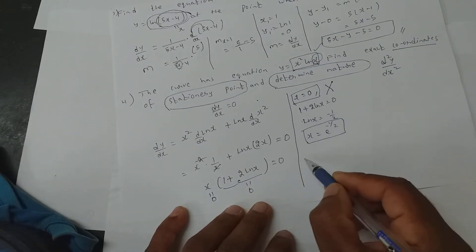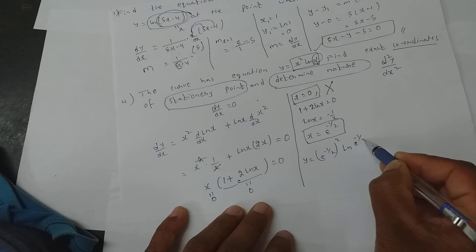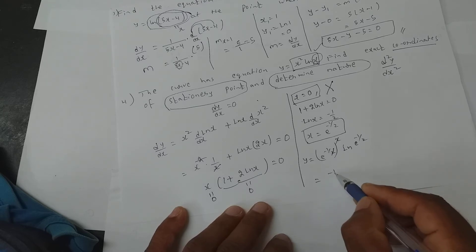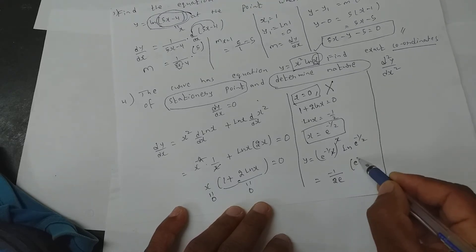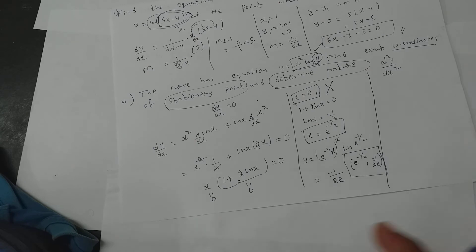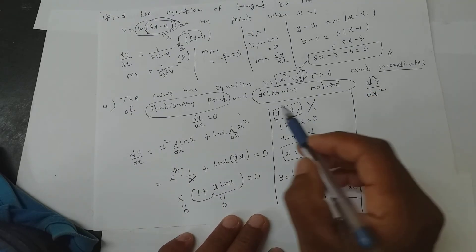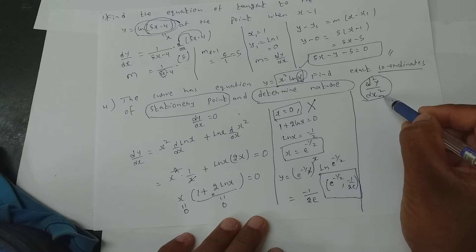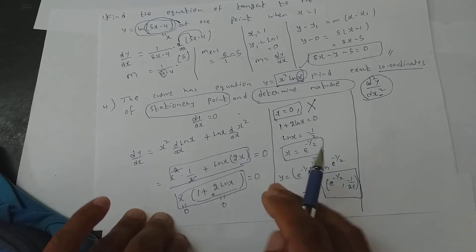They are asking for coordinates, so you need to find y as well. Place x equals e to the power minus half into y equals x squared ln x. So y equals (e to the power minus half) squared into ln(e to the power minus half). The 2s cancel, giving y equals minus 1 by 2e. So the coordinates are (e to the power minus half, minus 1 by 2e). Now to determine the nature, I need to differentiate dy by dx one more time.